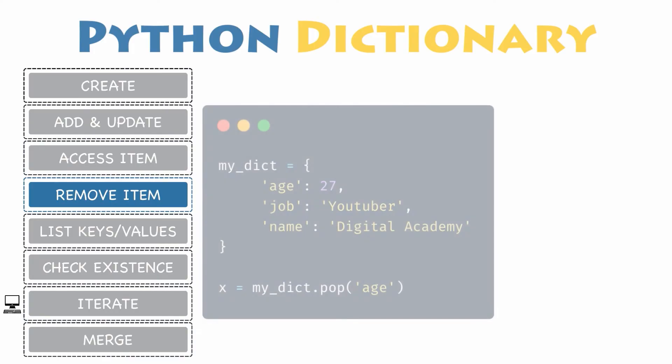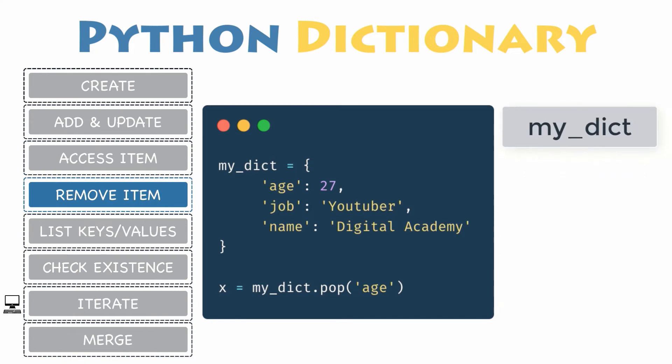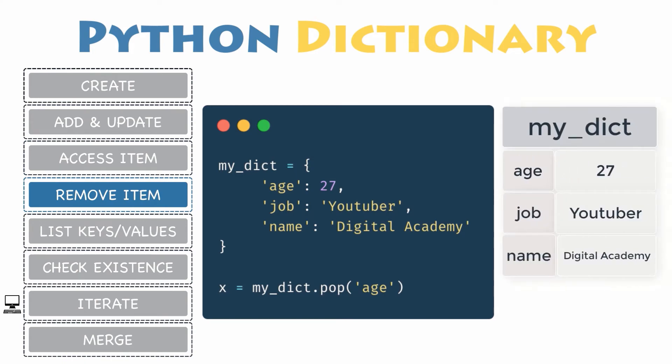There are several ways to remove items from a dictionary: either by its key, the last inserted item, a random item, or even remove all of them at once.